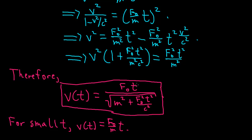But what happens as t gets large? As t goes to infinity, this term dominates. Then the square root on the bottom becomes F0 t over c. The F0s cancel, the t's cancel, and the velocity goes to c.